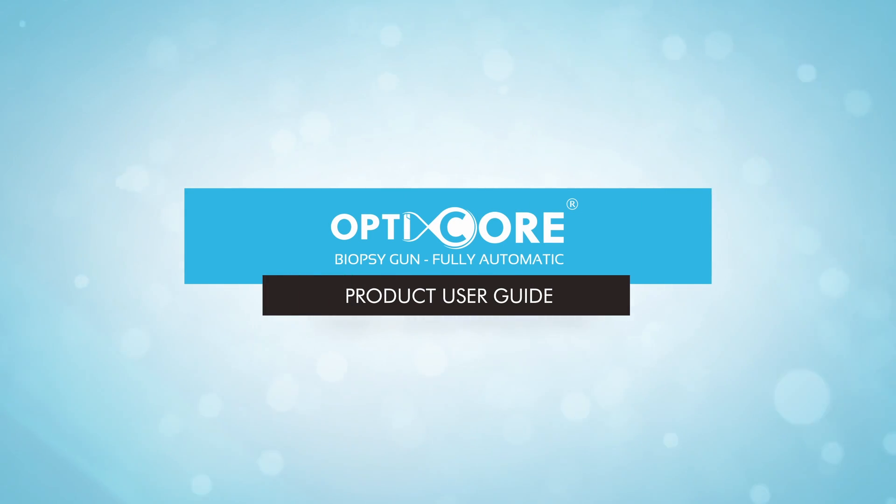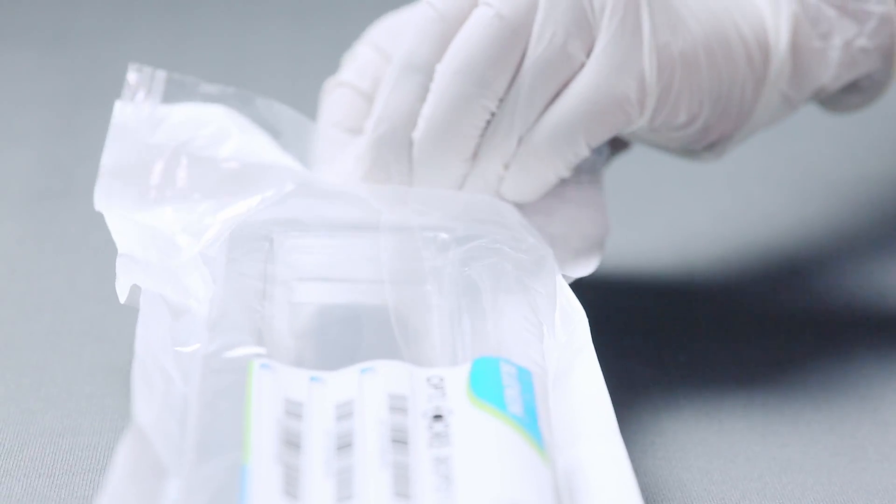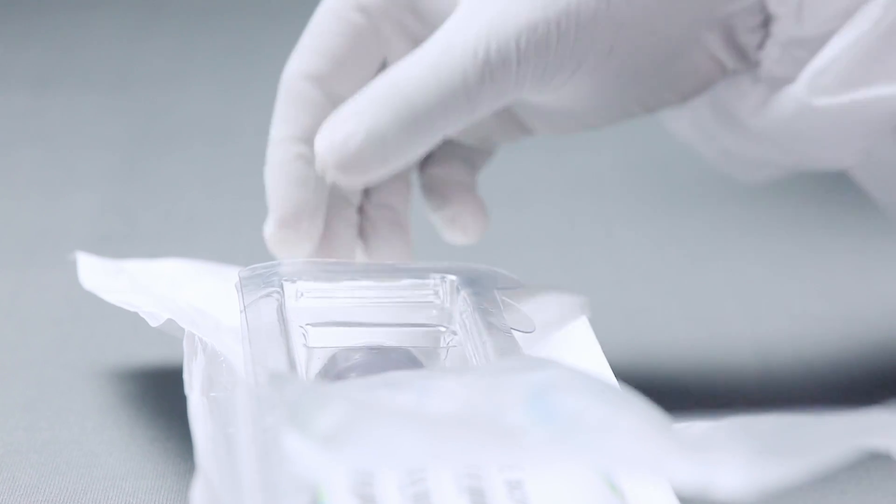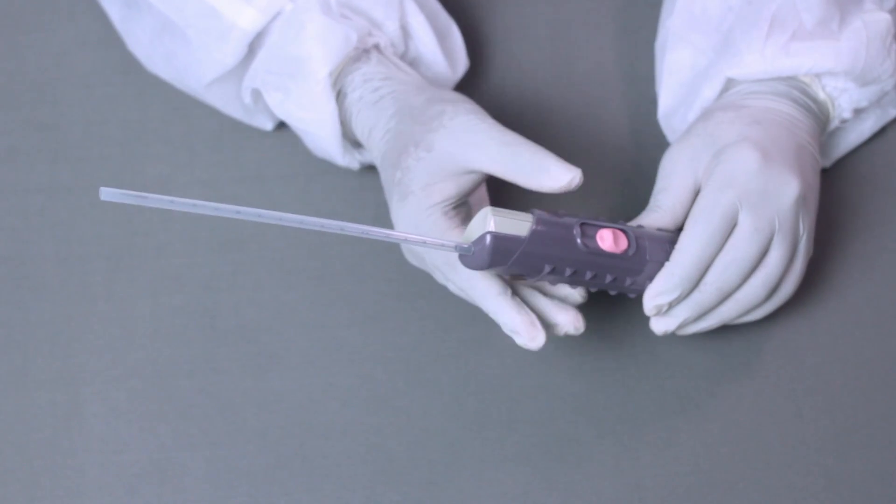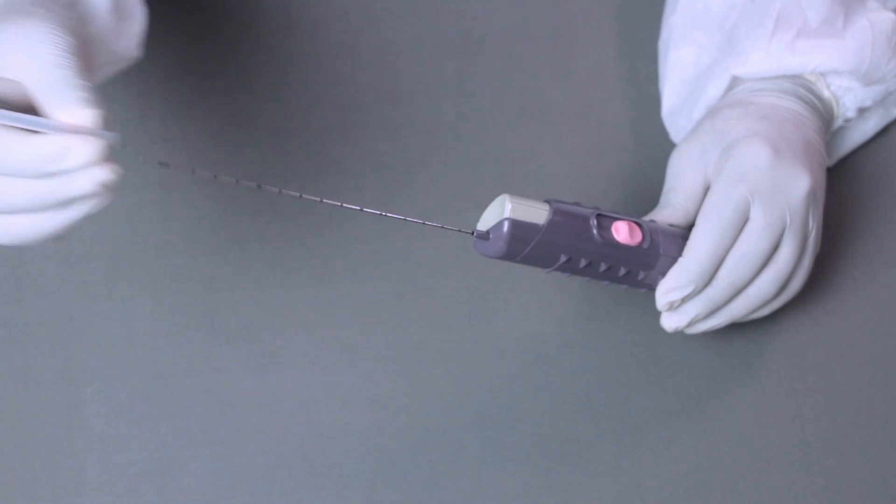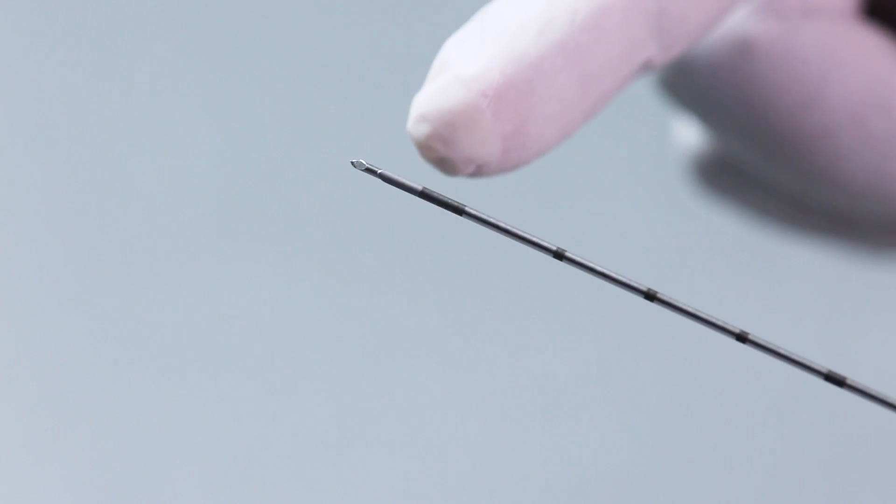OptiCore is a fully automatic biopsy gun. The biopsy gun comes with a protective sheath. The needle comes with a three-point sharp tip with ecogenic marking to aid in fluoroscopic visibility.